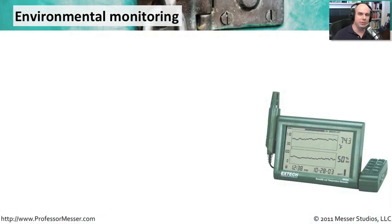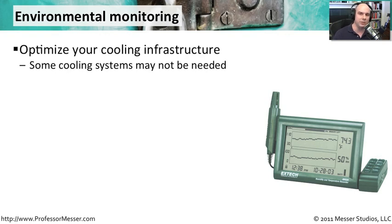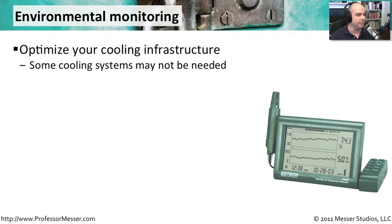We've got all these systems set up. We've created cold aisles and warm aisles. But is it really cooling? Is it really having the effect we want on the temperature? To know, we're going to have to monitor this temperature over a period of time. We want to make sure that what we are cooling is working, and that if we raise the temperature a bit to save money, we're not doing this at the cost of the systems in our environment. You may not need certain cooling systems or may be able to turn some off, but you'll never know unless you actually monitor these things over time.